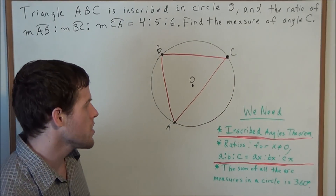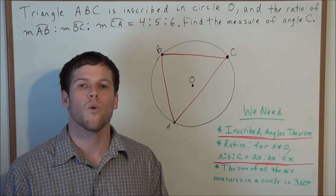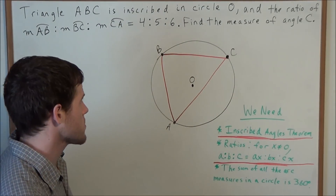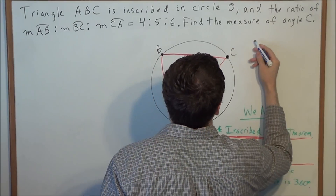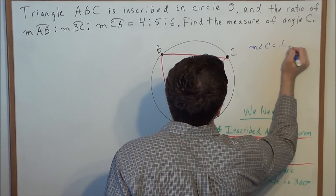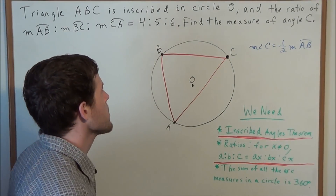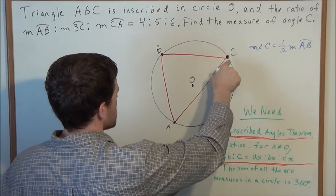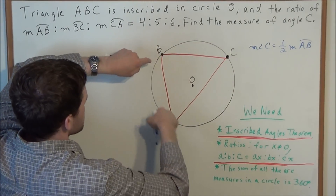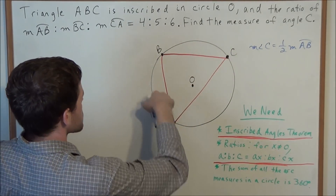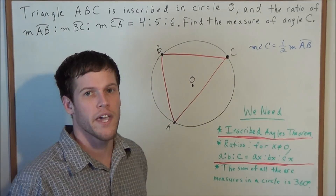Angle C is an inscribed angle, so we can use the inscribed angles theorem, which states that the measure of an inscribed angle is equal to one half the measure of the arc that it intercepts. So the measure of angle C is equal to one half the measure of arc AB. The reason we target arc AB is because when we form angle C using line segments BC and AC, those two line segments contain arc AB — that's what it means for inscribed angle C to intercept arc AB.